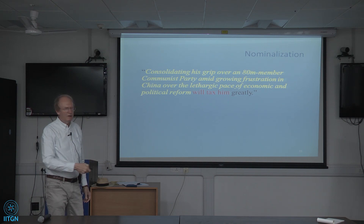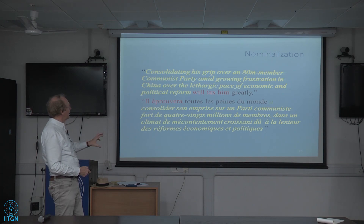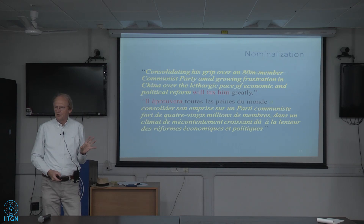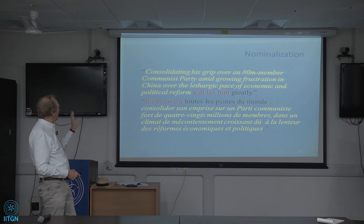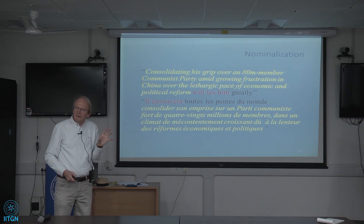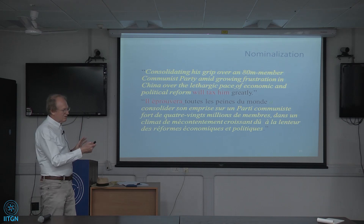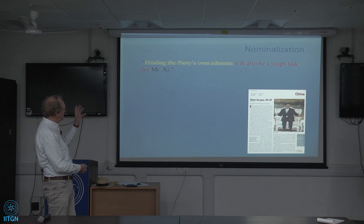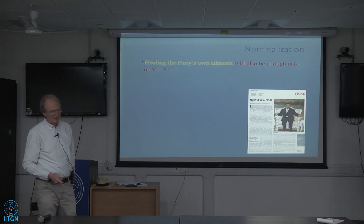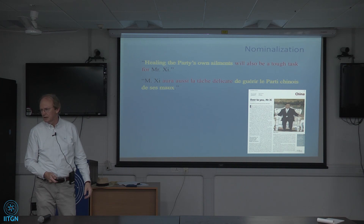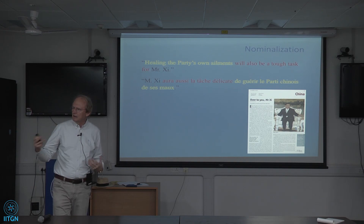In French, the same sentence starts 'Il éprouvera' — 'he will experience' — putting Xi Jinping in the agent slot rather than the subject of a nominalization, making his active involvement stronger. As an individual example this wouldn't mean much, but if you see this pattern recurring throughout the same text — like 'healing the party's own ailments will also be a tough task for Mr. Xi' versus the French 'Mr. Xi aura aussi la tâche délicate' — there seems to be a regularity, and again the question is: what is the overall effect?